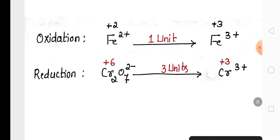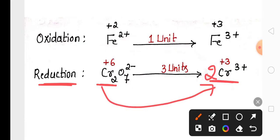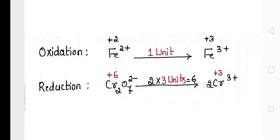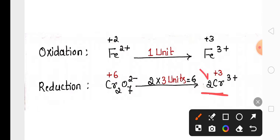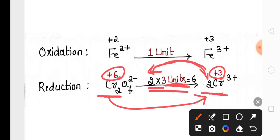In the reduction reaction, there are 2 chromium atoms on the reactant side but only 1 chromium on the product side. We balance this by placing 2 chromium ions on the product side. When we increase the number of chromium atoms by a factor of 2, we must also multiply the units by 2. The difference between +6 and +3 is 3 units, and multiplied by 2 gives 6 units.